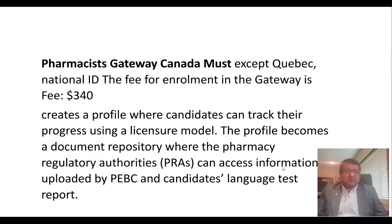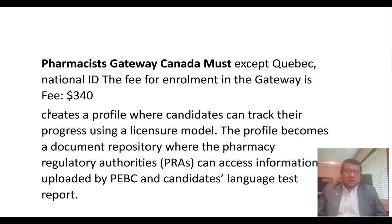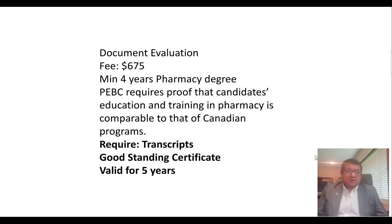The pharmacist gateway on the NAPRA website is mandatory for everyone except for COBQ. A national ID will be given to the candidate and the fee for this step is CAD $340. At this step you can select whichever province you want to practice in; you can change it later. Every document has to be uploaded on the NAPRA website as well as on the PEBC website. PEBC has recently started an online portal so once you register, everything will be shown in the portal.